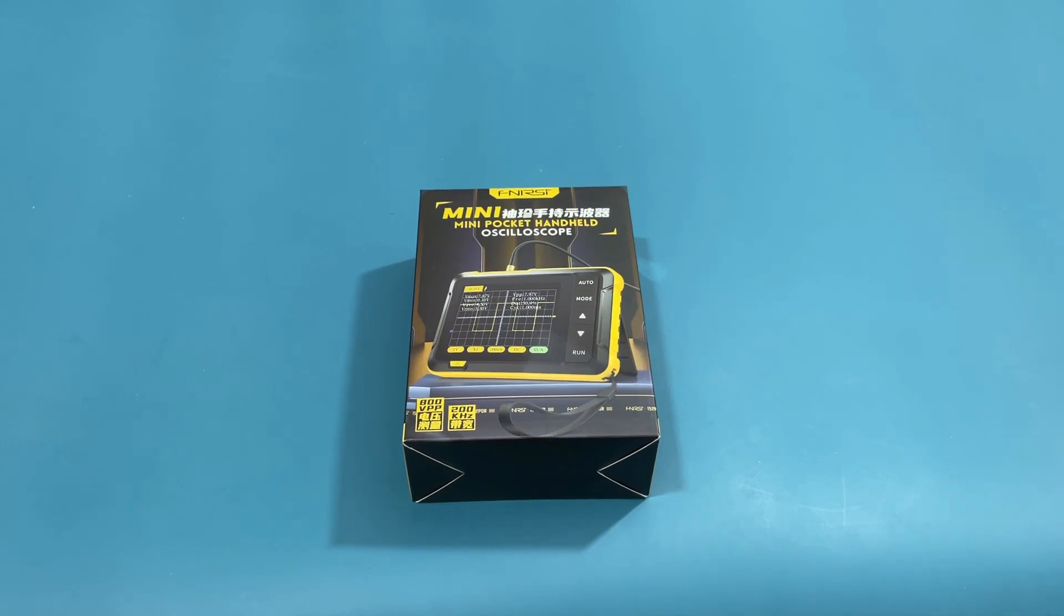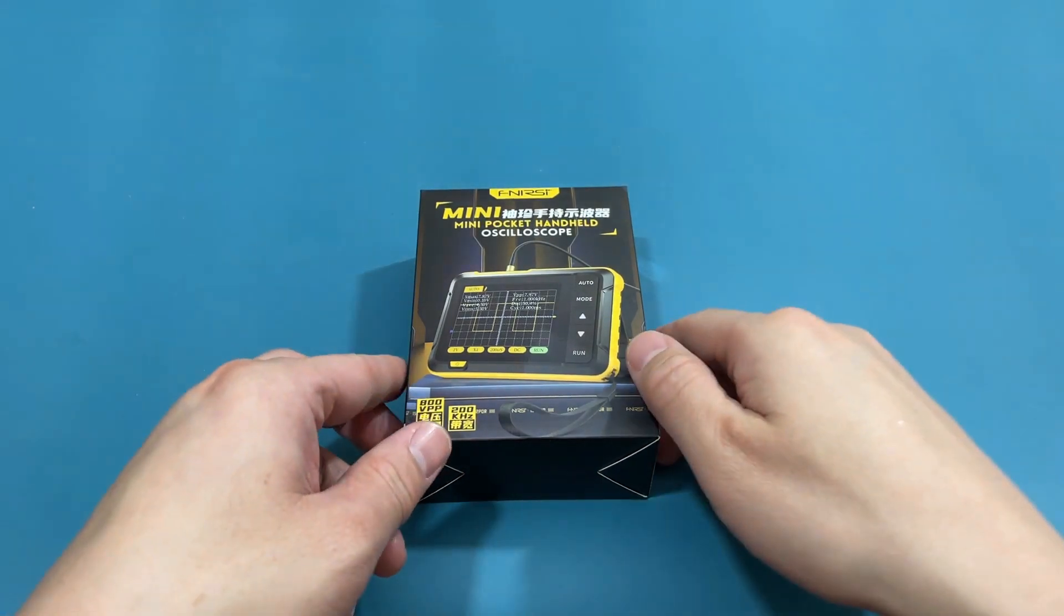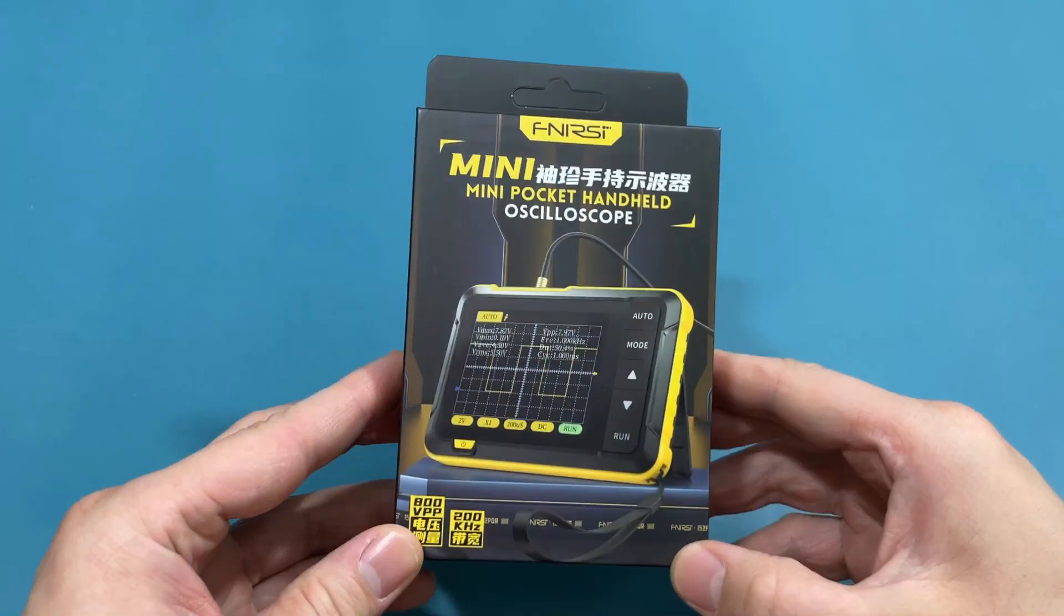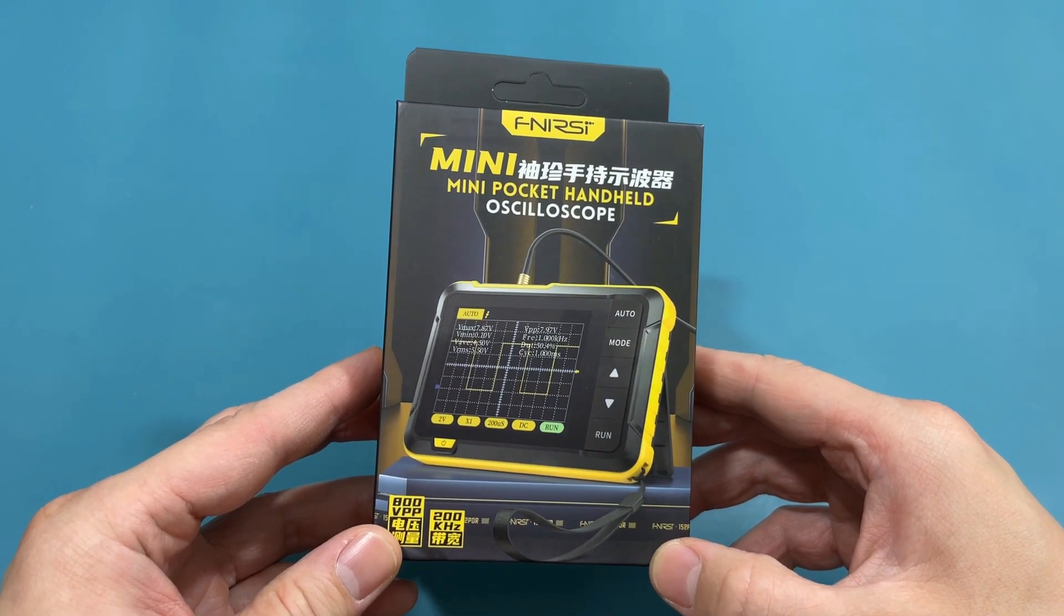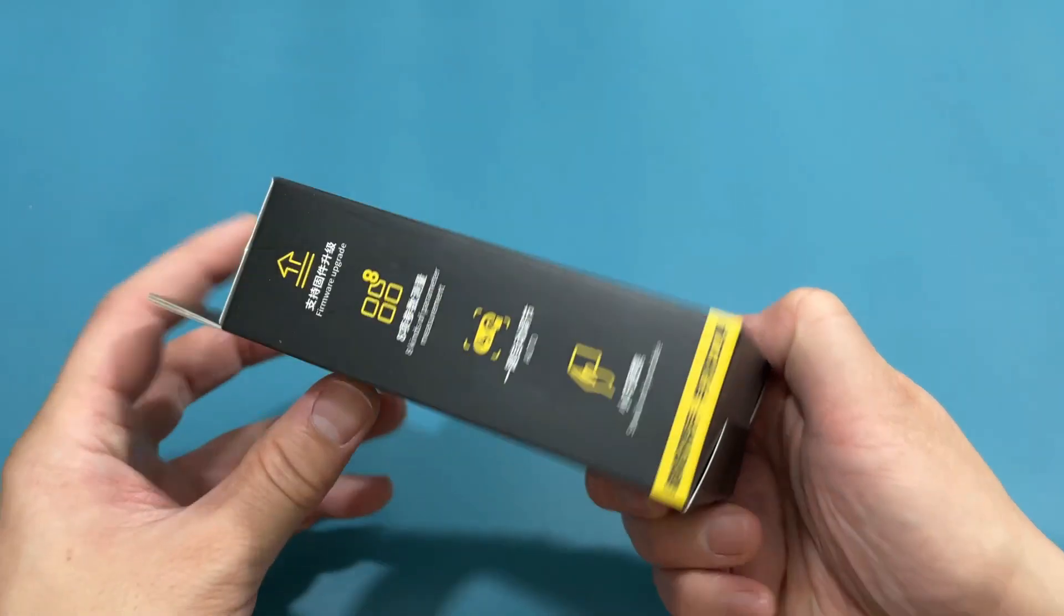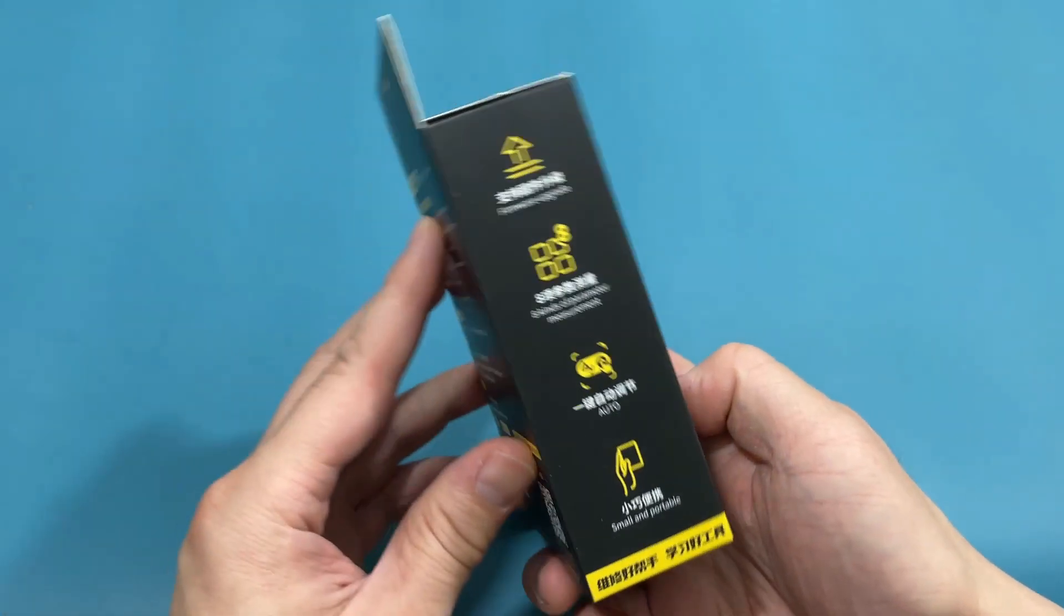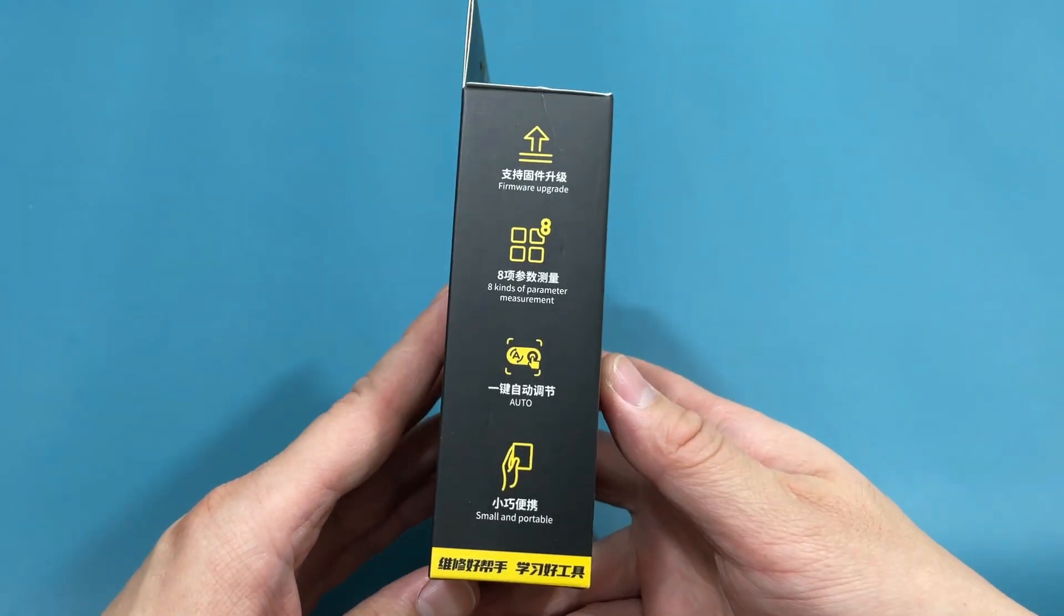Hey guys, today in the review, we have the FNIRSI DSO-152. We received this oscilloscope from the FNIRSI company to make a review. It's the handheld digital oscilloscope DSO-152.